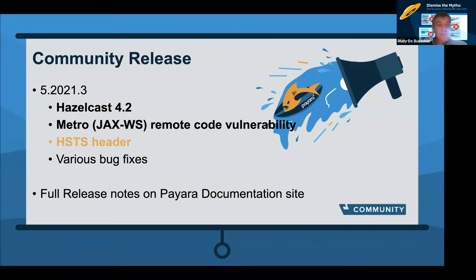Another important aspect of the May release is that we've fixed a remote code execution vulnerability related to the Metro framework. If your application uses SOAP messages and has SOAP endpoints, make sure you update to this release. With a specially crafted SOAP message, it was possible to initiate a remote code execution on the server — so this is important and you should upgrade to the latest version.